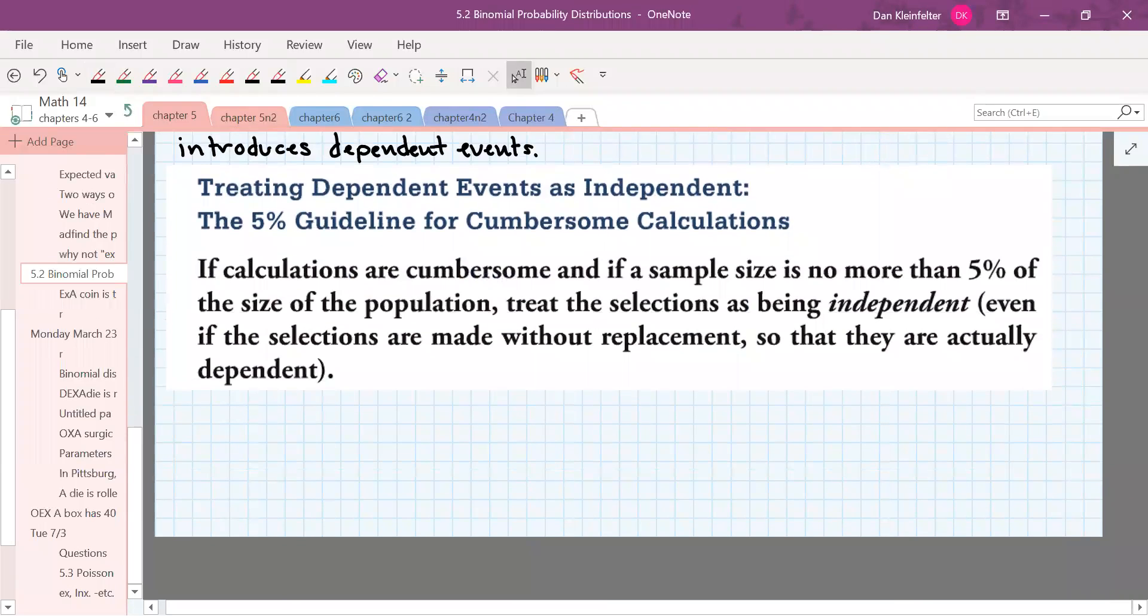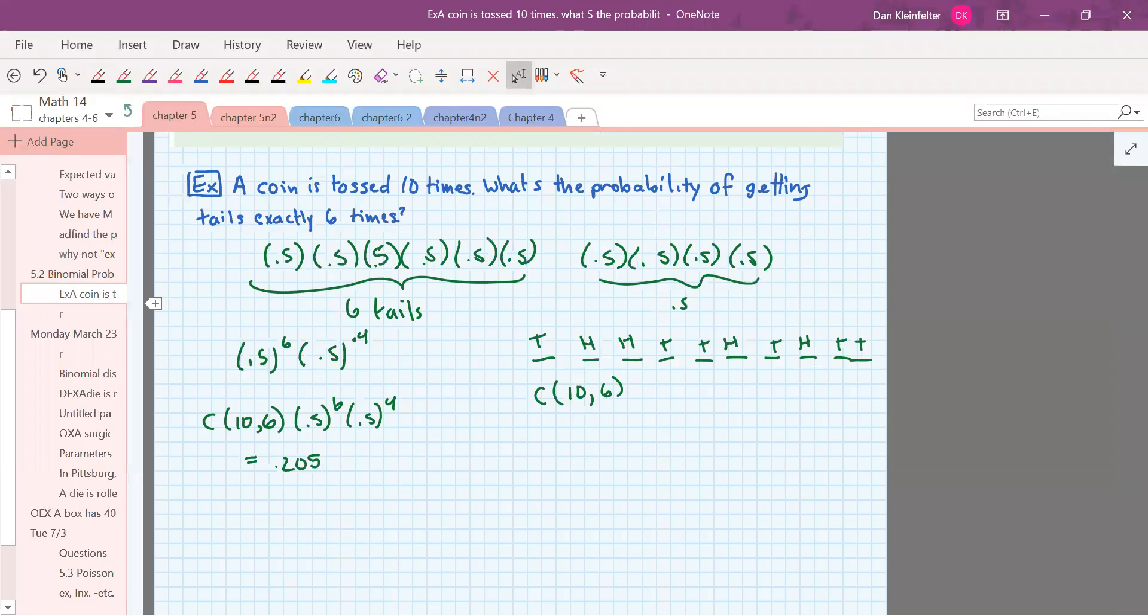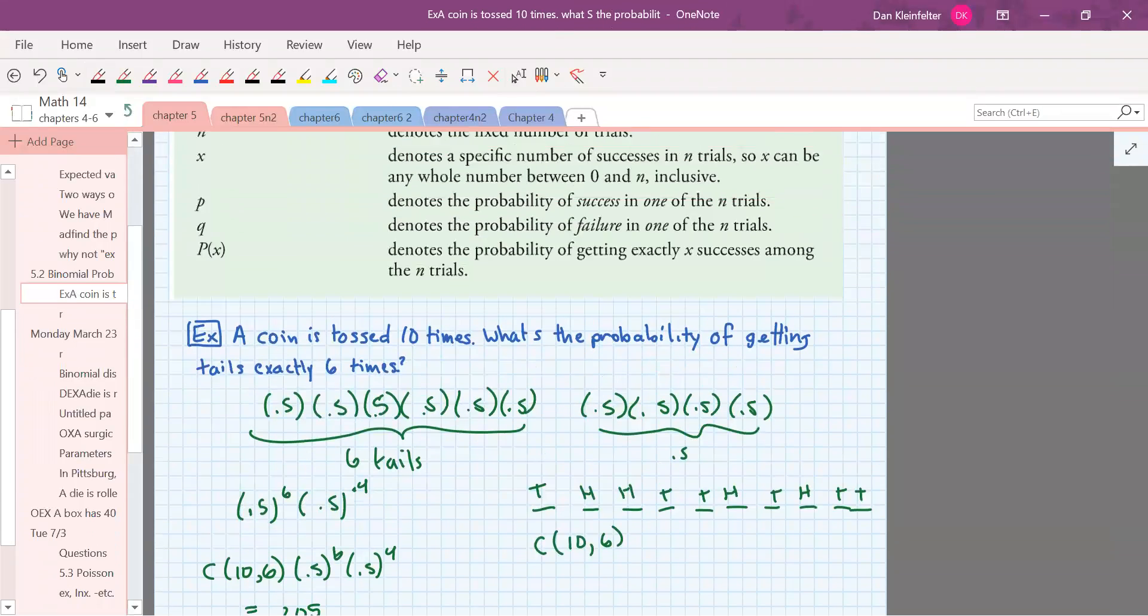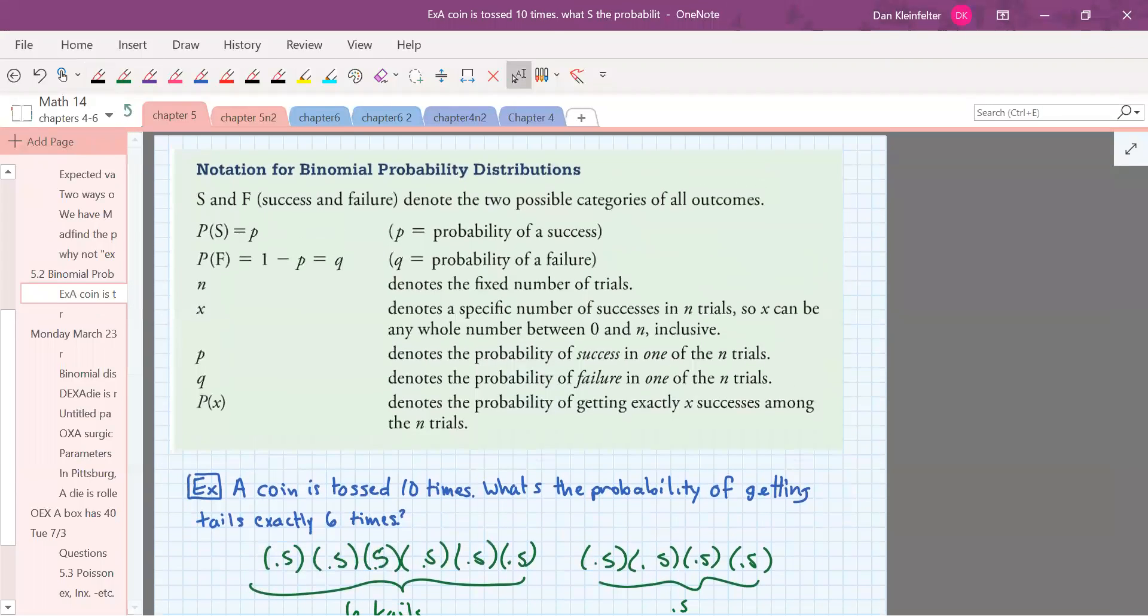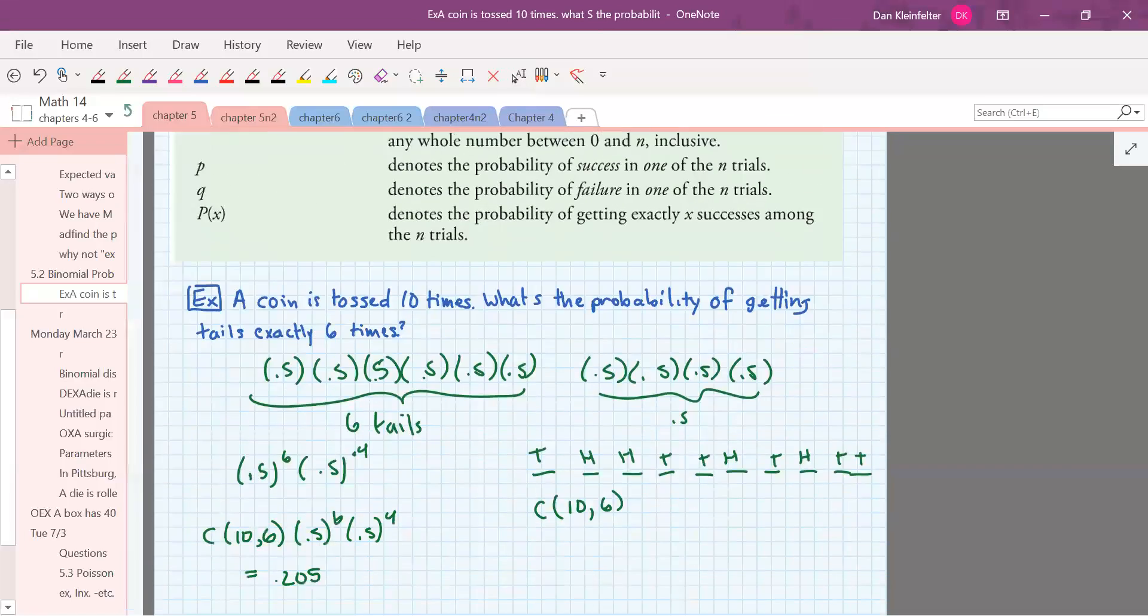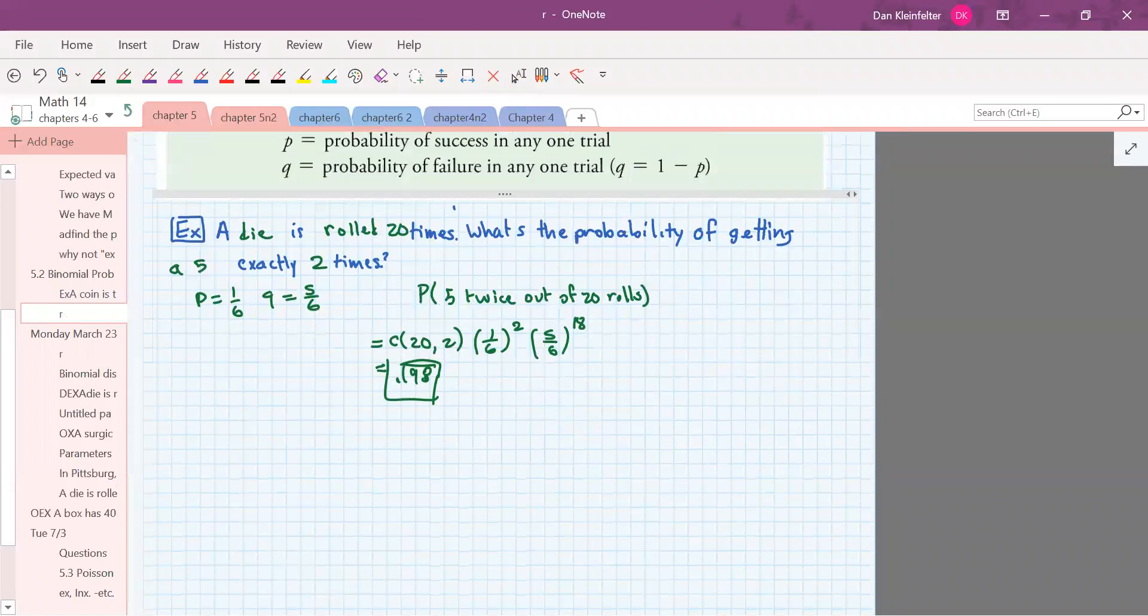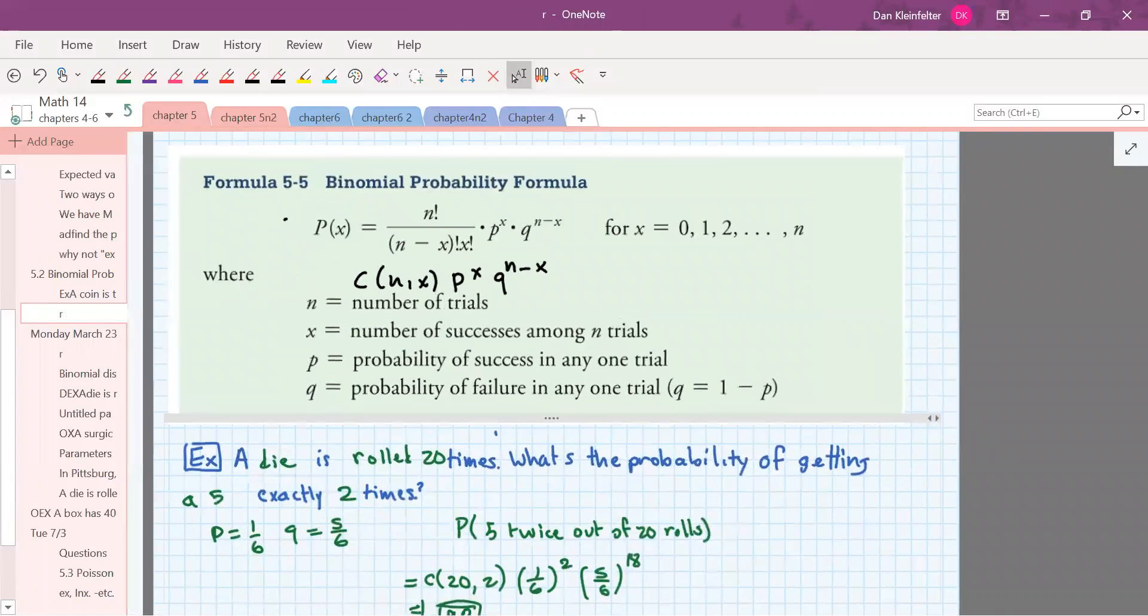So we had gone through an example involving flipping a coin. We had talked about the 5% guideline for cumbersome calculations. We've used this coin example to really understand the formula for a binomial distribution. And so let's re-look at that.